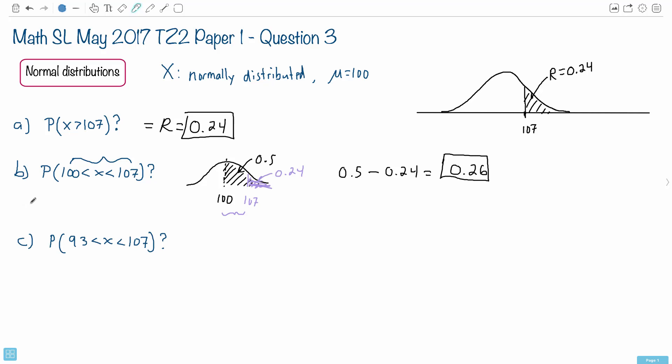In the final part of this question, we want the probability of finding x between 93 and 107. This one might seem complicated, so maybe it helps to do a diagram. Let's take a look at what we're actually given here.